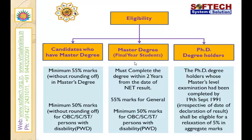Next, students who are currently doing their master's degree, i.e., final year students, can also attend the National Eligibility Test. The condition set for them is they must complete the degree within two years from the date of the NET result. Again, the same mark condition applies: general category students should obtain 55% and above, and for other categories, 50% and above.